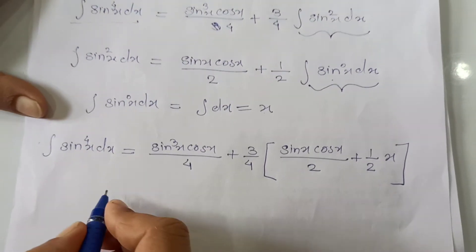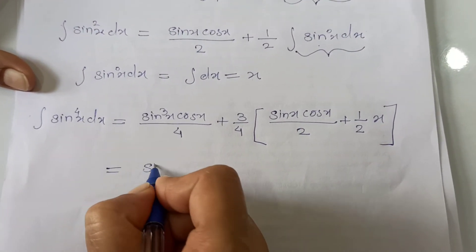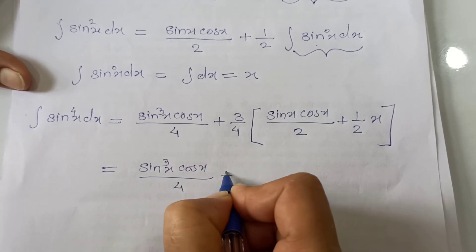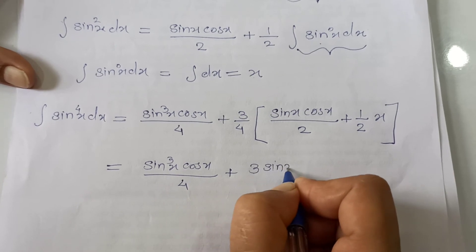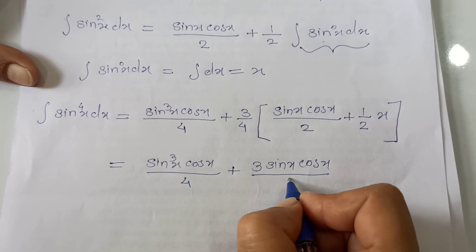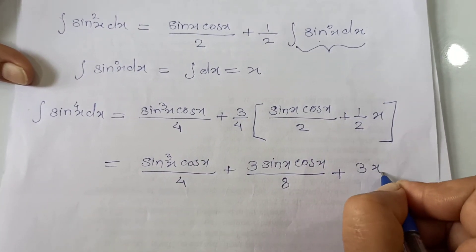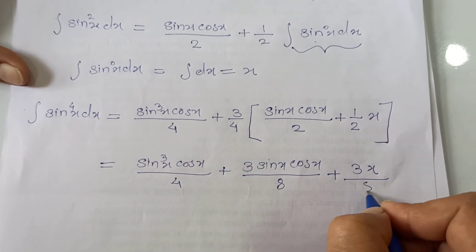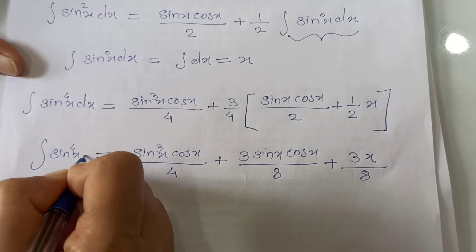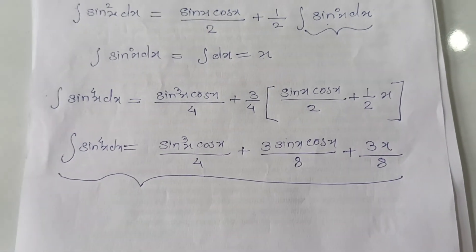Back-substituting, the integration of sin raised to 4 of x dx equals sin³x·cos x / 4 plus (3/4) times [sin x·cos x / 2 + (1/2)·x]. Expanding: sin³x·cos x / 4 + 3·sin x·cos x / 8 + 3x / 8. This is the final value for the integration of sin⁴x dx, and this concludes Example 1.